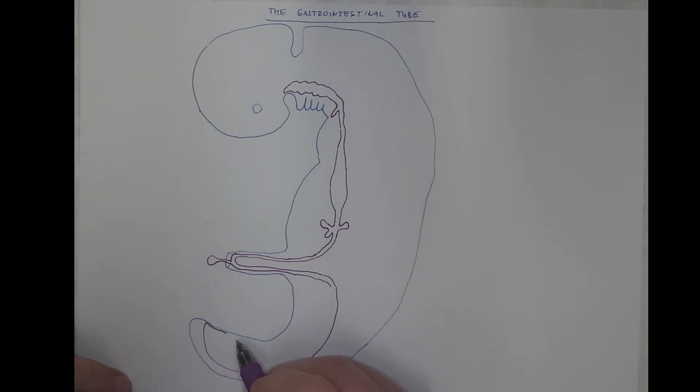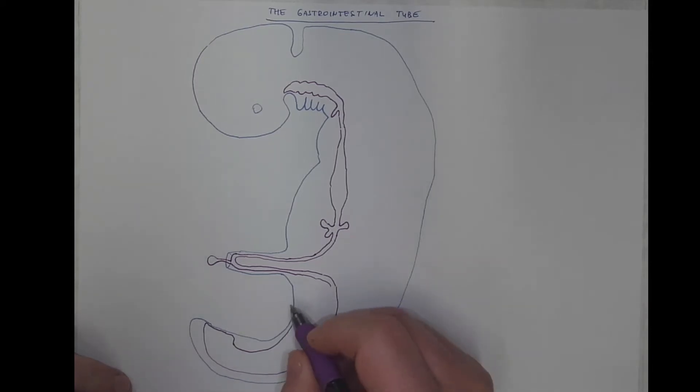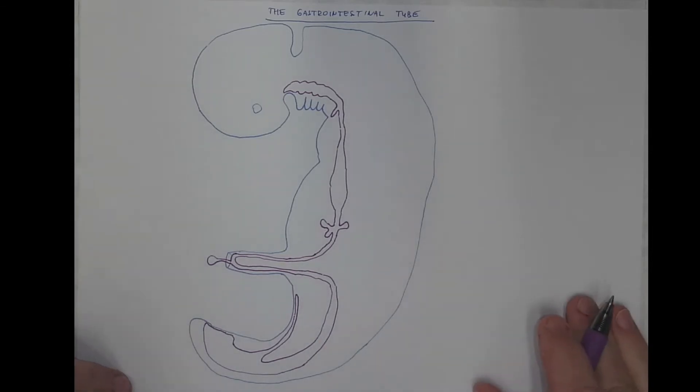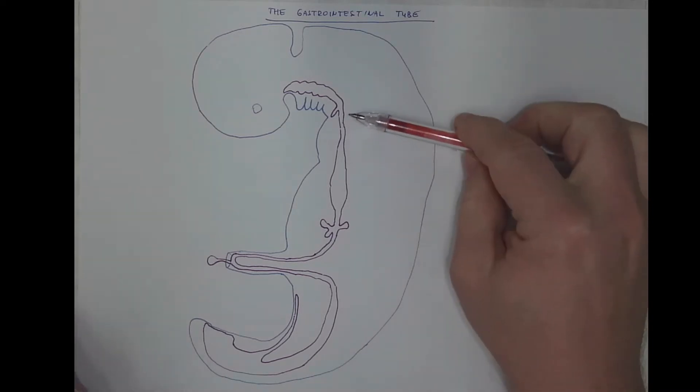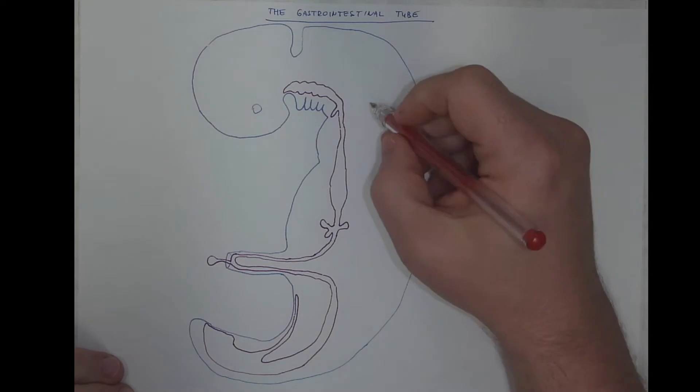The terminal division is the cloaca, the common part of the GIT and urinary and genital systems. Then we got a blindly ending projection called allantois that goes towards the umbilicus, and here is the posterior division of the gastrointestinal tube.